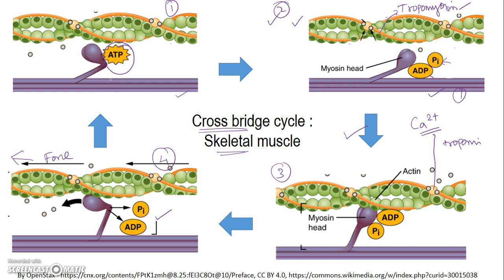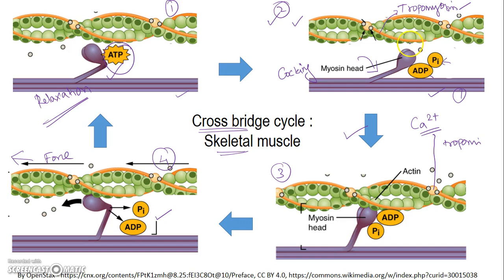Detachment of myosin happens only when a fresh ATP molecule binds to the myosin head after ADP and PI are released. Only then does the myosin head lose affinity for actin and relaxation occurs. Once ATP is bound, the myosin head immediately hydrolyzes it into ADP and PI, and the myosin head changes its angle in a process called cocking. If tropomyosin is still open, the cross-bridge cycling keeps continuing. But once calcium concentration drops and tropomyosin returns, the muscle rests at stage 2 again. Contraction is brought about by an increase in calcium, and relaxation by a decrease in calcium.